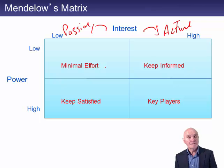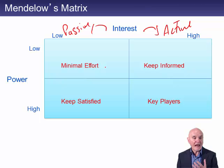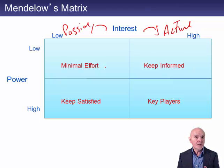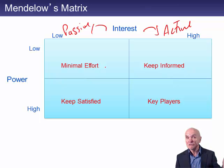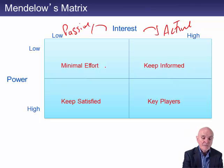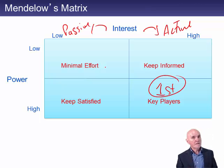First of all, the key players. These are people who have got high power and we know that they're very active and perhaps very militant — maybe a very strong trade union or something of that sort. By and large, these people can stop a strategy in its tracks. If they're employees, they could go on strike. If they're customers, they could simply abandon you. If they're shareholders, they can come to the AGM and if necessary sack the directors. These people really do come first in the queue — you have to keep them sweet and give them pretty much what they want.